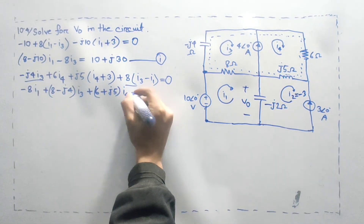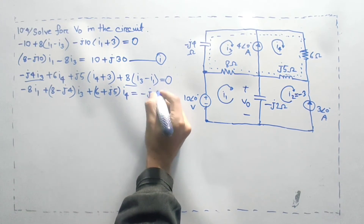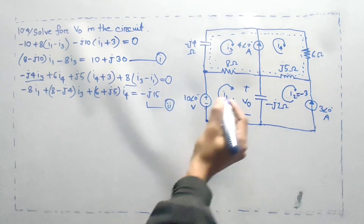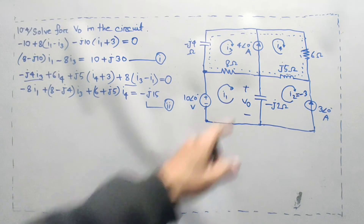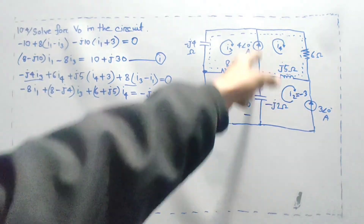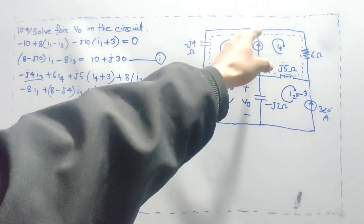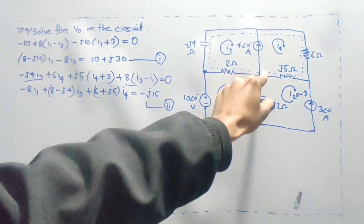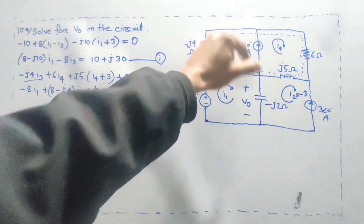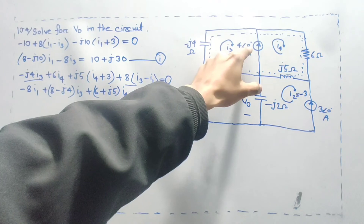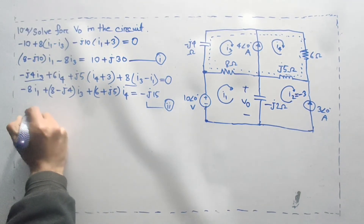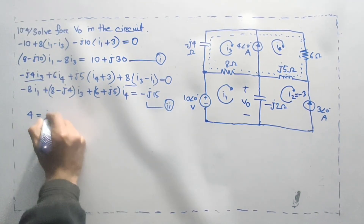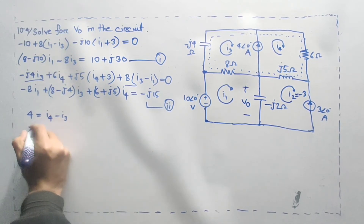The constant: j5 into 3, and the right side is minus j15. This is equation number two, and the other involves i1, i3, i4. So we have the same equation. Now, 4 angle 0 degree is equal to i4 minus i3.